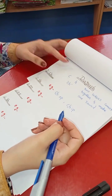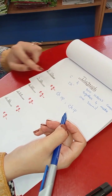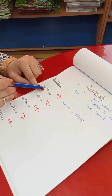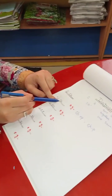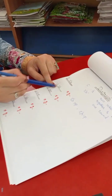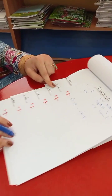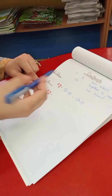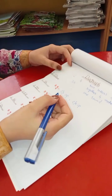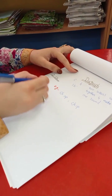The second digraph is SH. This is S and H. The sound of S is 's' and the sound of H is 'h'. But when they both come together, they make one sound called 'sh'.